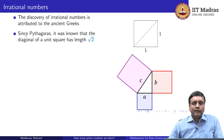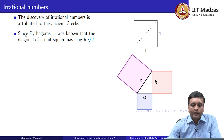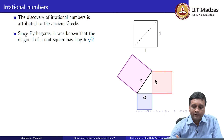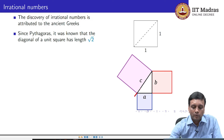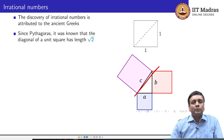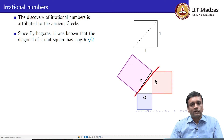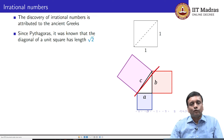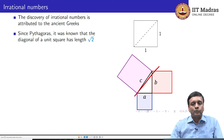Remember that in Pythagoras' theorem, which you must have studied in school, if you have a right-angled triangle, then the square on the hypotenuse — that is the square on the long diagonal side — has an area which is the sum of the squares on the other sides. In other words, if you have a right-angled triangle and you measure the three sides, you get a squared plus b squared is equal to c squared.